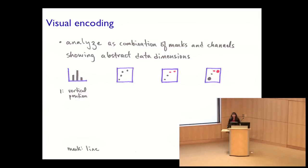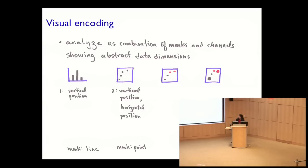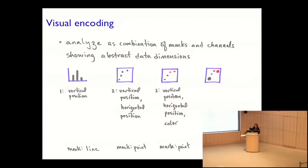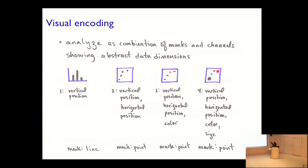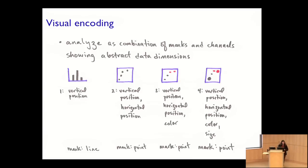A bar graph uses a line mark and encodes one abstract data dimension using the visual channel of vertical position. A scatter plot switches to a point mark and uses both vertical and horizontal spatial position to encode two abstract dimensions. We can add color as a third abstract dimension, then add size as a fourth visual channel encoding a fourth dimension. This raises questions: how did we decide to use these channels? How many are there? What kinds and how much information can they convey? Are some better than others, and can we use them independently?